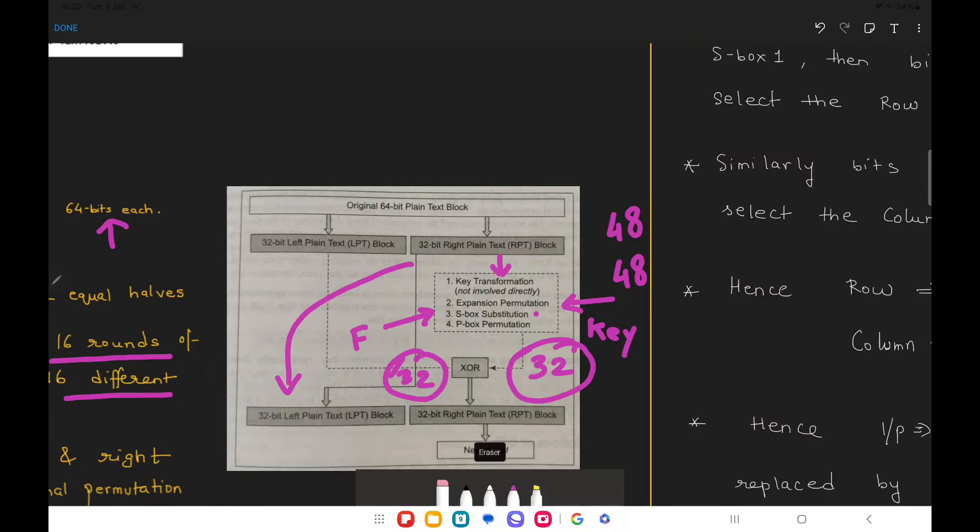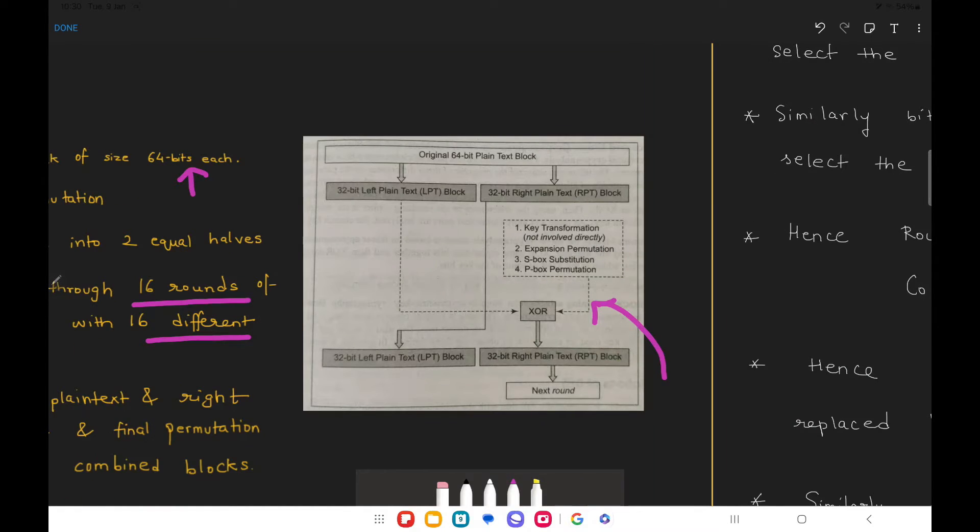This is where we have obtained our final RPT of 32 bits and with that we come to the conclusion of the inner operations that happen inside each round or the inner function block.